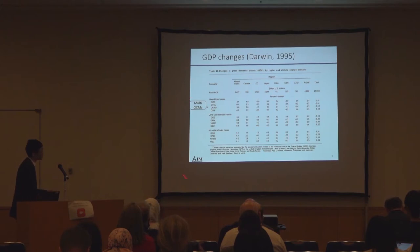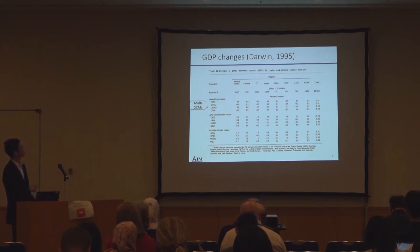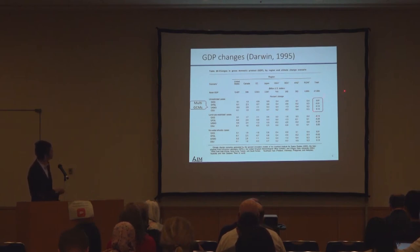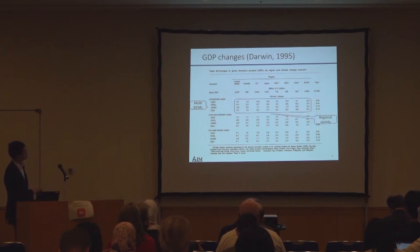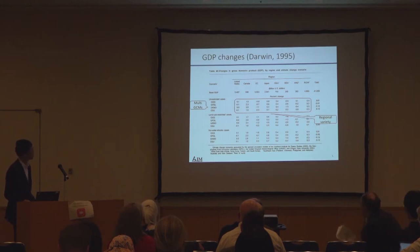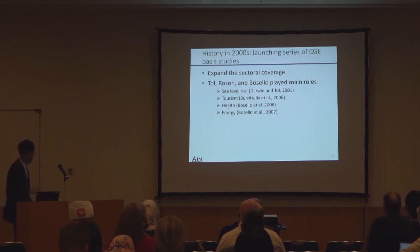At that time, they considered multiple GCMs here. This is the highlight of this study, which shows the regional changes in gross domestic products. There are multiple GCMs used to compute the climate shocks. Here we have global total GDP changes, and the percentage change is very tiny in the global total. But there is a huge regional variety spanning from around minus one percent to plus two percent. I think this is a remarkable initial study in this field.